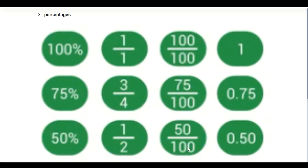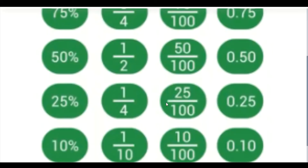For 50 over 100: 50 goes into 100 twice, and 50 into 50 once, so expressed in decimal that is 0.5, and in percentage it is 50 percent — that is half of 100. For 25 over 100, we have 0.25, which is 25 percent. For 10 over 100: 100 cannot go into 10, so we have zero, then adding zero makes 100, which goes into 100 once — giving 0.10, or 10 percent.